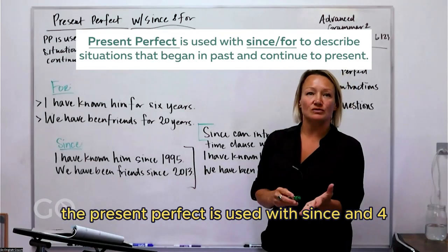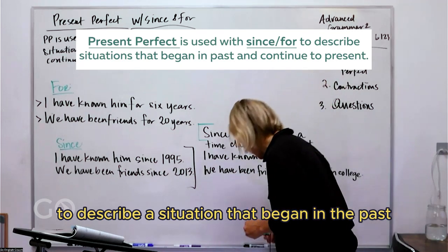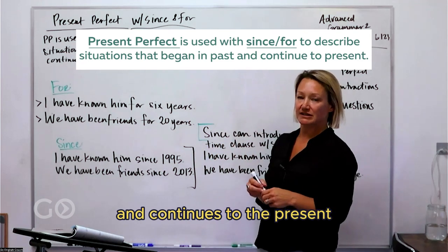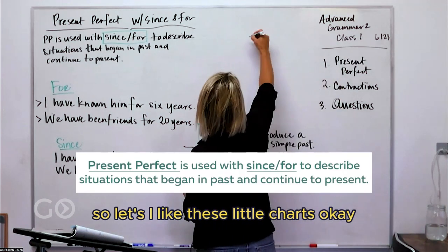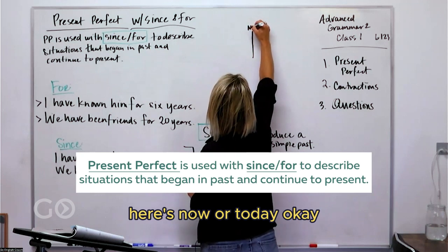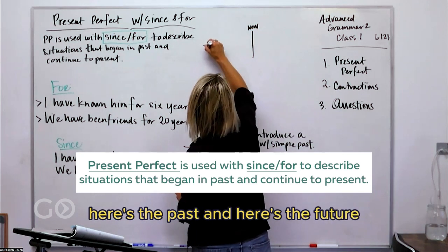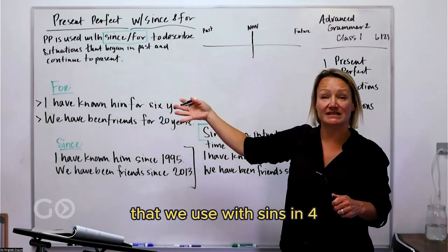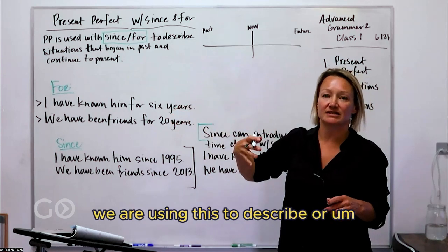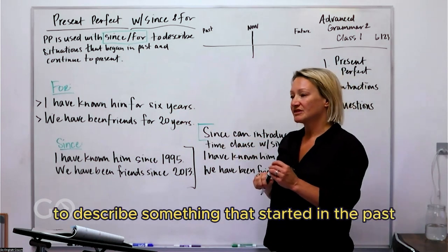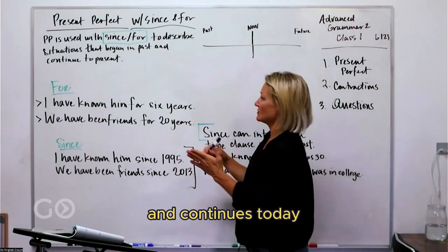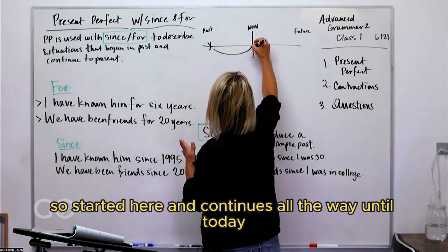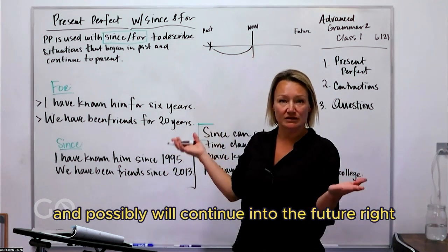The present perfect is used with since and for to describe a situation that began in the past and continues to the present. Here's now or today, here's the past and here's the future. So when we have present perfect that we use with since and for, we are using this to describe something that started in the past and continues today and possibly will continue into the future.